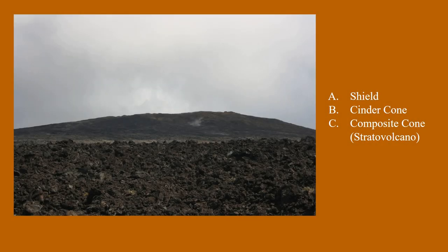This next one is a shield volcano — Kilauea in Hawaii. You can see the dark rock, which is basalt. It's sort of hard to see that this is a volcano at all because the slopes are so gentle. That's because those mafic magmas are not very viscous at all — they flow really easily, giving you these really broad, quite large volcanoes with really gradual, shallow slopes. So it's basalt, more mafic in composition.